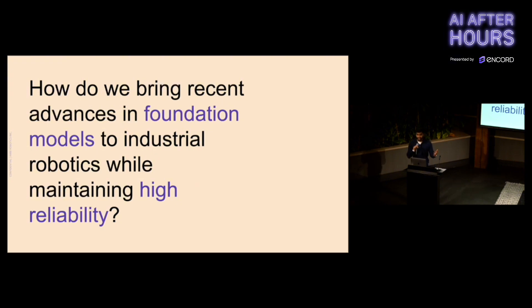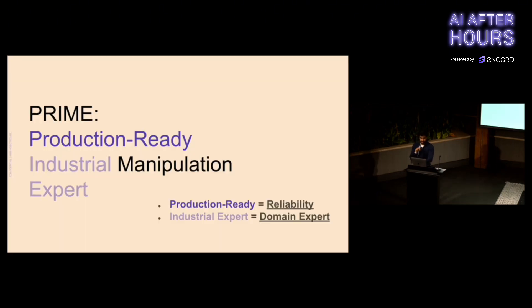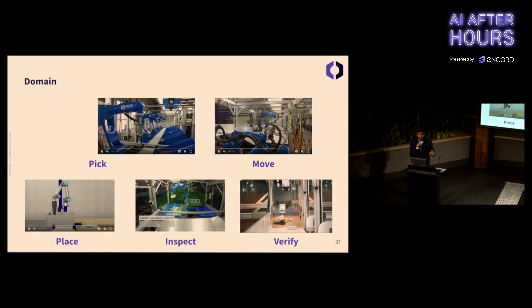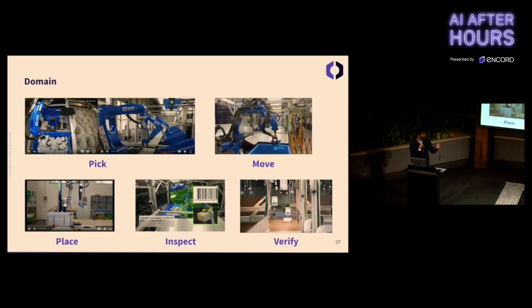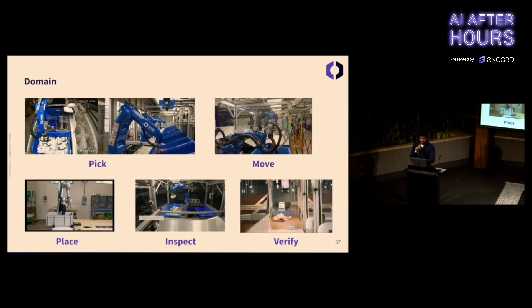So the big question is, how do we bring recent advances in foundation models to industrial robotics while maintaining high reliability? And our answer to that is Prime 1. Prime stands for production-ready industrial manipulation expert. Production-ready means reliability. Industrial expert means Prime is a domain expert. And what is the domain? The domain is all these AI skills: picking, moving, placing, inspecting, verifying parcels.